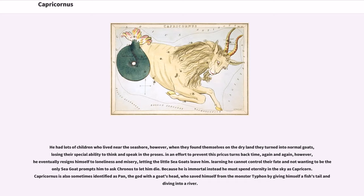In an effort to prevent this, Pricus turns back time, again and again. However, he eventually resigns himself to loneliness and misery, letting the little sea goats leave him. Learning he cannot control their fate and not wanting to be the only sea goat prompts him to ask Kronos to let him die. Because he is immortal instead he must spend eternity in the sky as Capricorn. Capricornus is also sometimes identified as Pan, the god with a goat's head, who saved himself from the monster Typhon by giving himself a fish's tail and diving into a river.